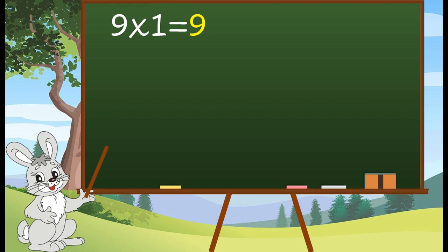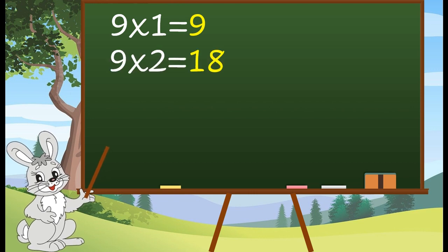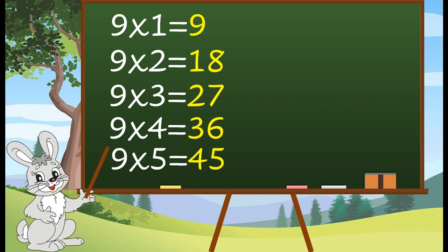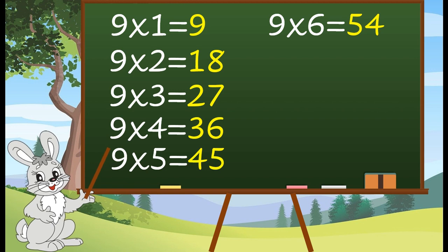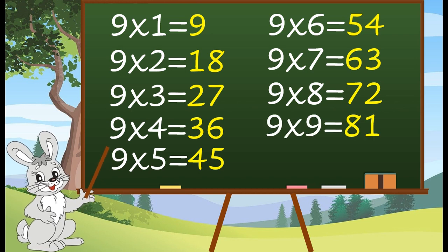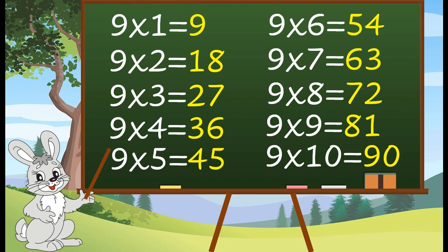9 1's are 9. 9 2's are 18. 9 3's are 27. 9 4's are 36. 9 5's are 45. 9 6's are 54. 9 7's are 63. 9 8's are 72. 9 9's are 81. 9 10's are 90.